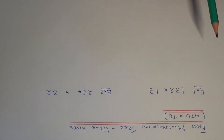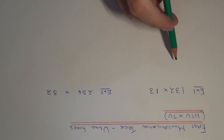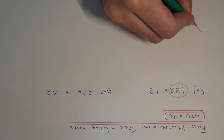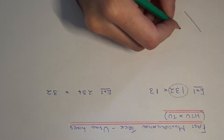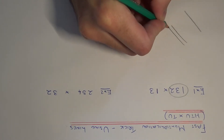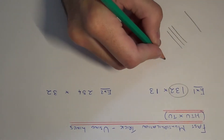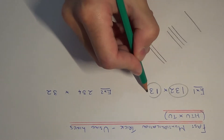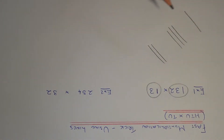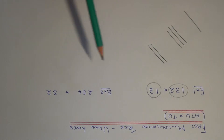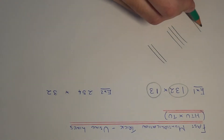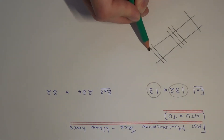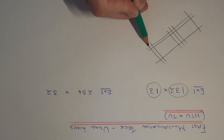So we need to work out 132 times 13. We're going to split the first number up into lines. We're going to have one line for the hundreds, three lines for the tens, and two lines for the units. Now we just need to split the second number with diagonal lines going downwards. We need one line for the tens up at the top, and then three lines for the units. Just make these a little bit longer.